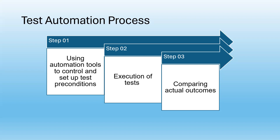There are three main steps in the test automation process. The first step is using a test automation tool to set up the preconditions and main script, and control those preconditions. Step two is execution of the test. Step three is comparing the actual outcome with the expected outcome that we have defined in the precondition.